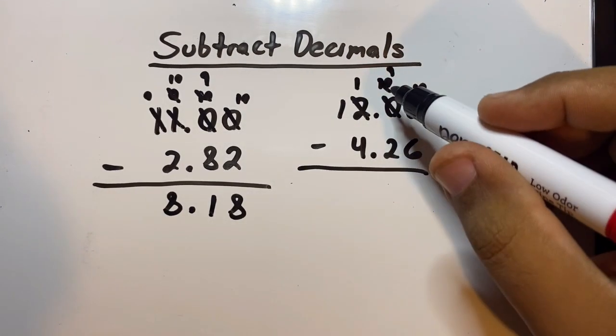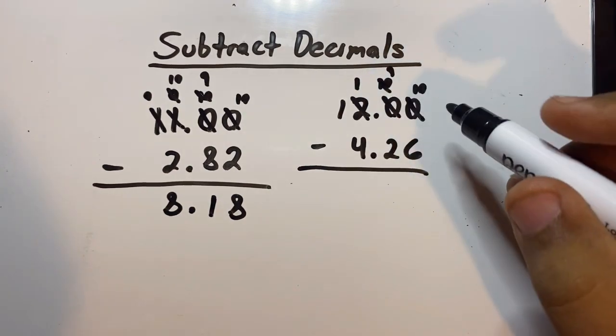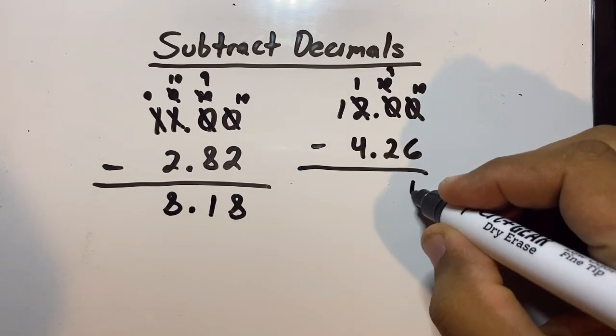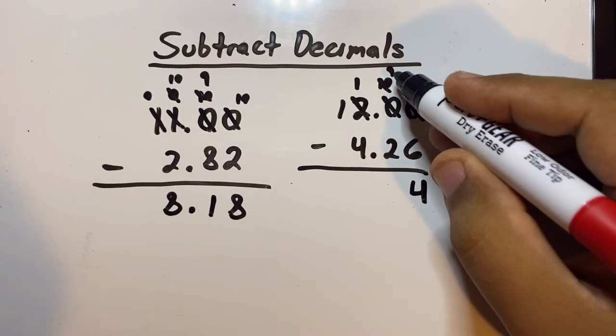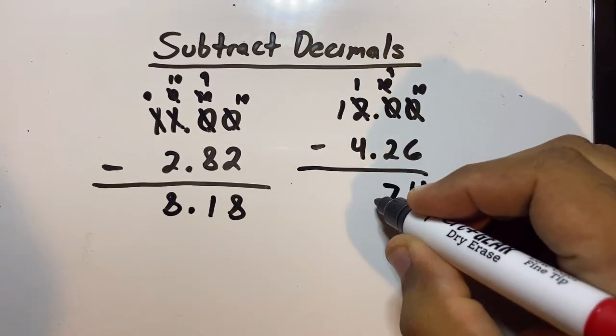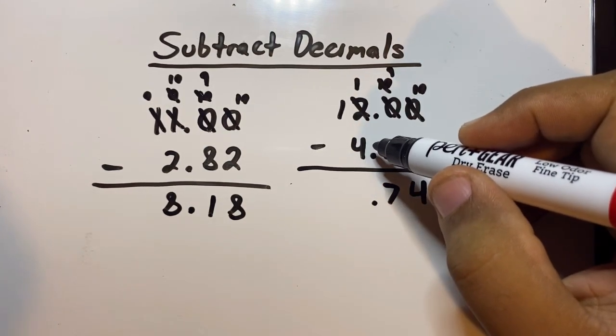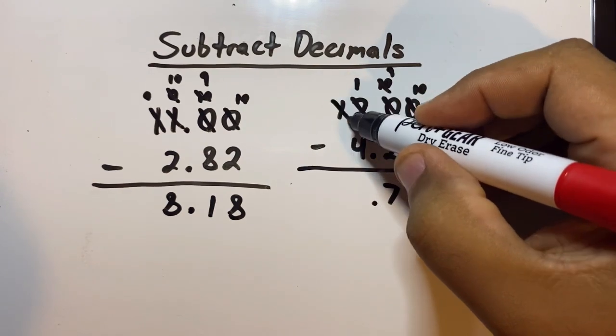Okay, sorry, this 10 becomes a 9, sorry. Okay, so now we can subtract. 10 minus 6 is 4, 9 minus 2 is 7. We can't do 1 minus 4, we can't do that, so we have to borrow again. This 1 here becomes a 0, and this 1 becomes an 11. You guys got it, good?